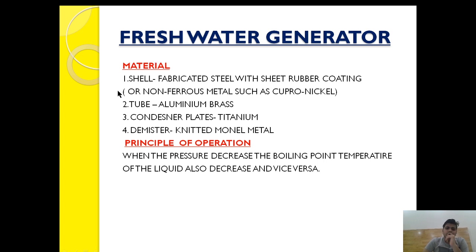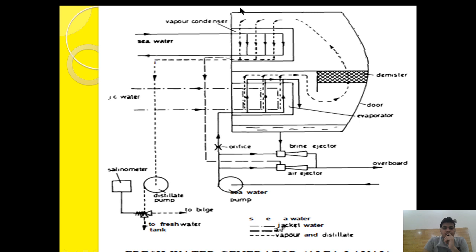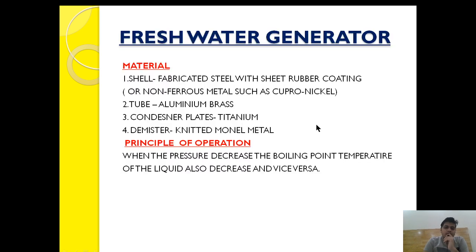The fresh water generator material basically consists of four things. First, the cell — the cell is made up of fabricated steel with sheet rubber coating. The idea is to use a cell which is of non-ferrous metal, because we are using sea water as a component for generating fresh water. If it is ferrous metal it will cause corrosion, so we use fabricated steel or non-ferrous metals such as copper-nickel with rubber coating to avoid any chances of corrosion.